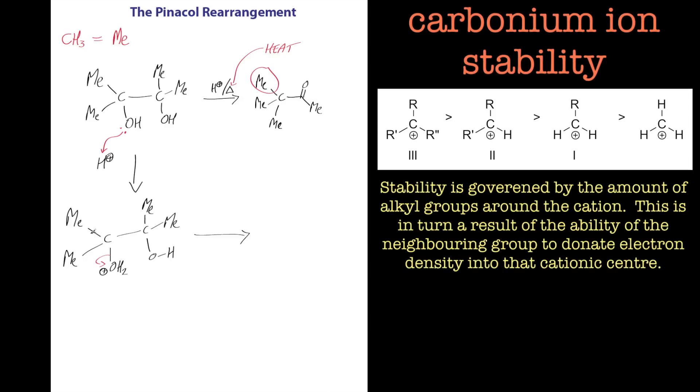The next stage is the loss of water, or elimination of water, to give this carbonium ion. This carbonium ion is stabilized by the alkyl groups around it. If you've done hyperconjugation before, you'll know about this. The general rule of thumb is that tertiary carbonium ions are stabilized more than secondary, more than primary. You look at the amount of alkyl groups around that carbonium ion. It's a relatively stable intermediate and will exist for a short lifetime before the next stage of reaction occurs.